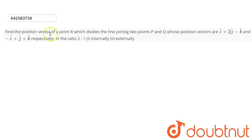So here we have to find the position vector of a point R which divides the line segment joining two points, that is P and Q, whose position vectors are this and this. These are in ratio 2 is to 1 internally and externally. In the first part we will be determining the position vector that is dividing these line segments internally.